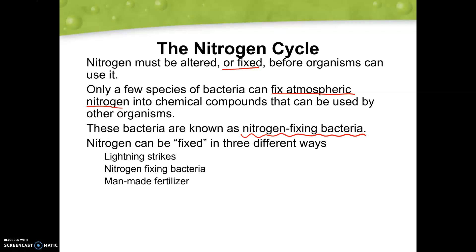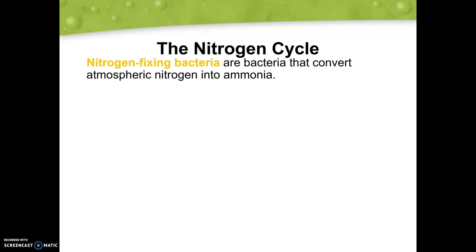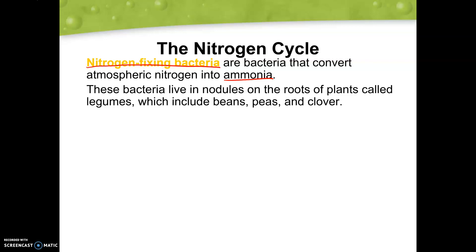Nitrogen can be fixed in three different ways. Lightning strikes can change nitrogen into different nitrates that we can use in soils. We also have nitrogen fixing bacteria, which we just mentioned. And then man-made fertilizer can bring nitrogen into our ecosystems as well. So those three methods are: lightning fixation, nitrogen fixing bacteria, and man-made fertilizer for crops. This includes beans, peas, and clovers as examples of plants involved.